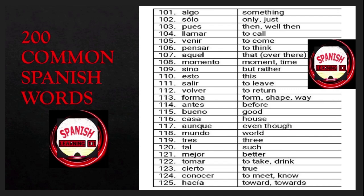Esto is 'this'; salir is 'to leave'; volver is 'to return'; forma is 'form,' 'shape,' or 'way'; antes is 'before'; bueno is 'good'; casa is 'house'; aunque is 'even though'; mundo is 'world'; tres is 'three'; tal is 'such'; mejor is 'better'; tomar is 'to take' or 'to drink'; cierto is 'true'; conocer is 'to meet' or 'to know'; hacia is 'toward' or 'towards'.